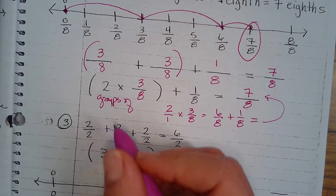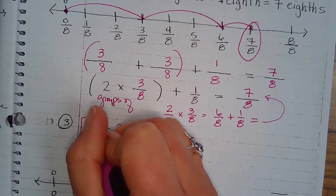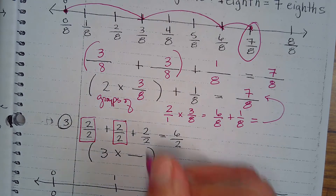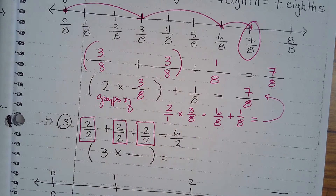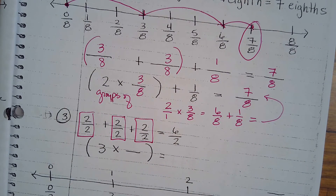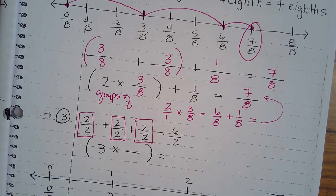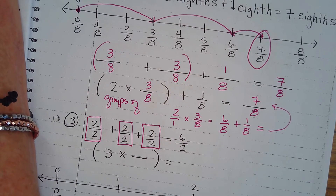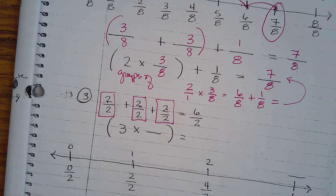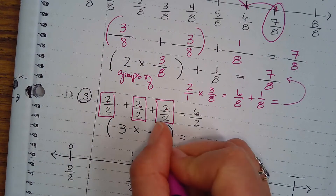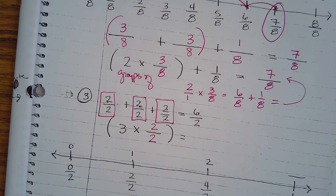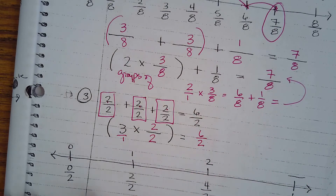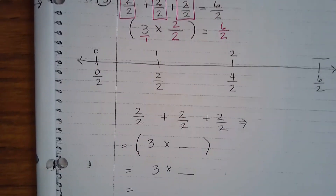Now, two over two, which is one whole. Two over two, which is one whole. And two over two, which is one whole. I have three groups of one whole — three groups of two over two — which is going to give us six halves. Let's take a look at it using the number line.